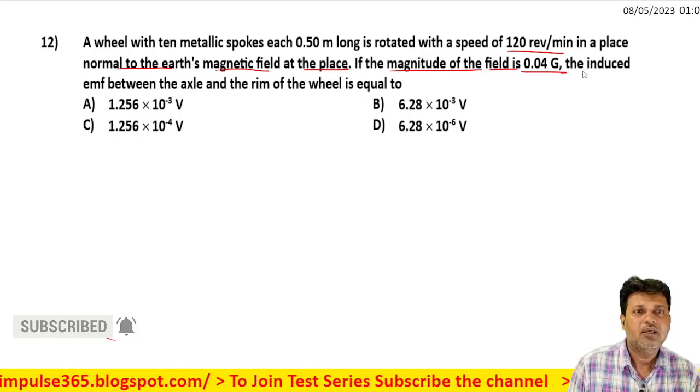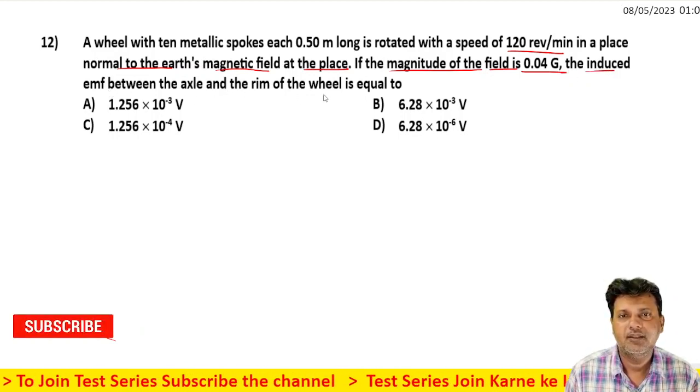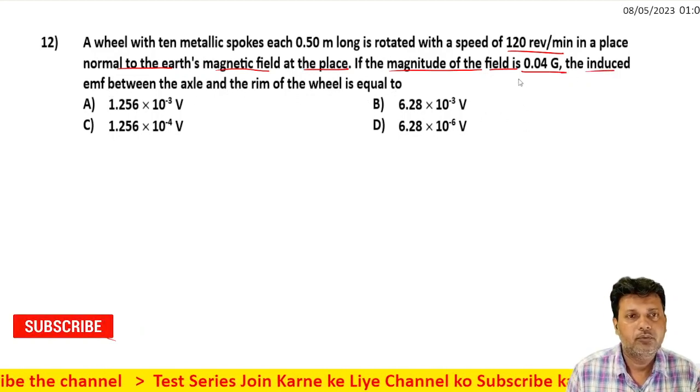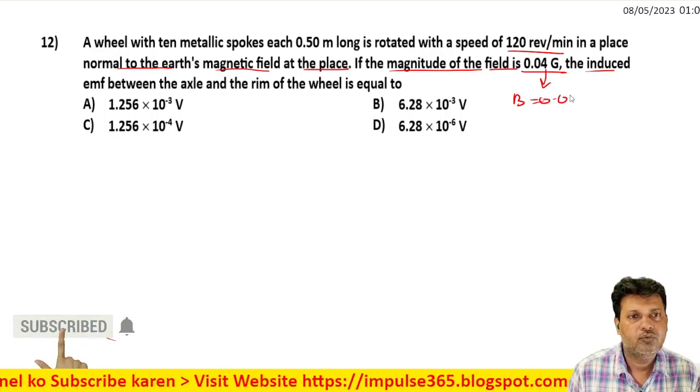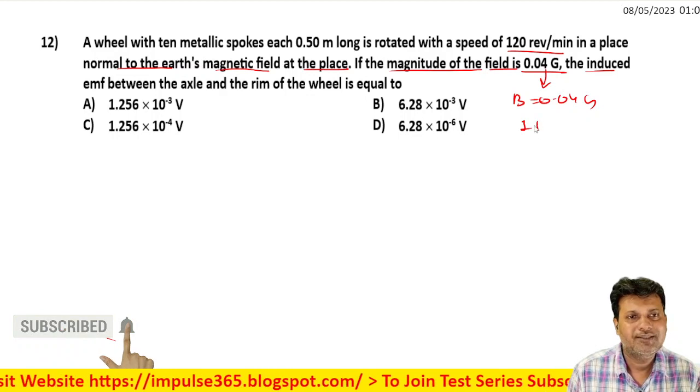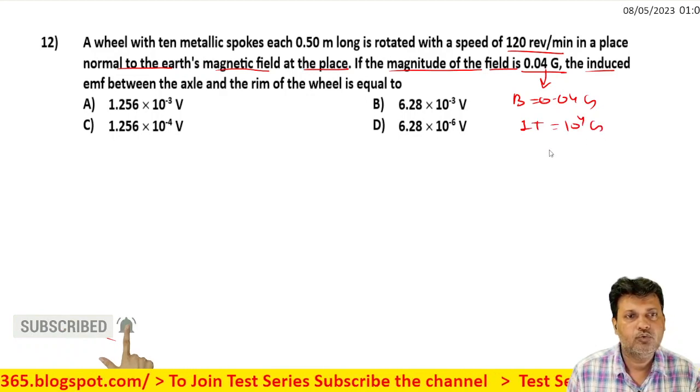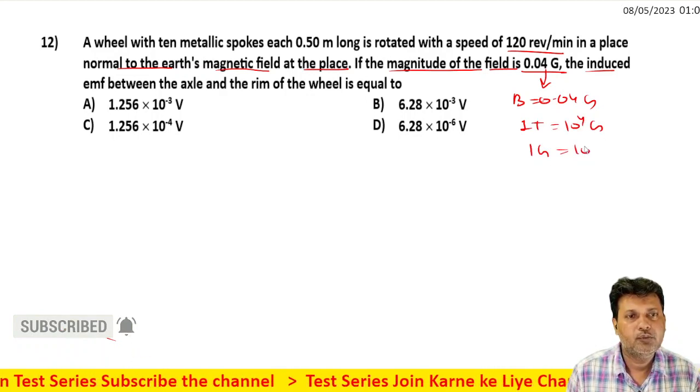The magnetic field value is given as 0.04 gauss. Now, one tesla is equal to 10 to the power 4 gauss, so one gauss is equal to 10 to the power minus 4 tesla.